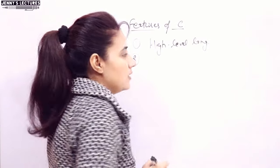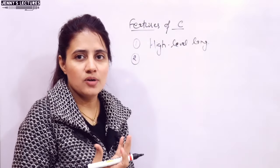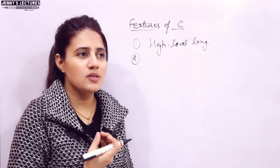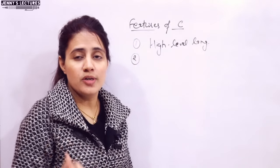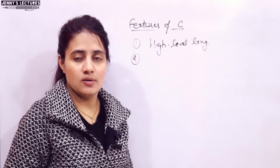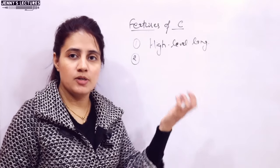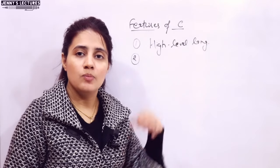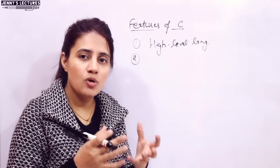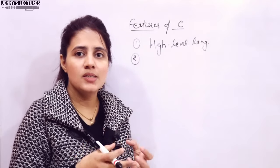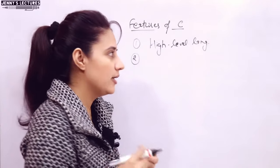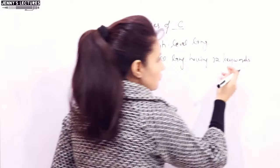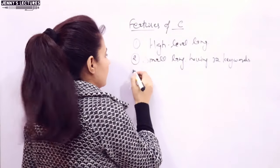The second feature is that C is a small language. It has only 32 keywords, whereas other languages like C++ and Java have more keywords. So it is a small language — you can easily learn it with just 32 keywords, and that is why it is easy to learn.